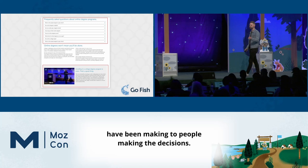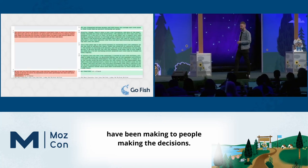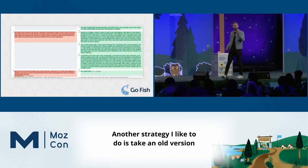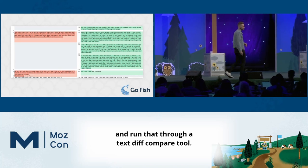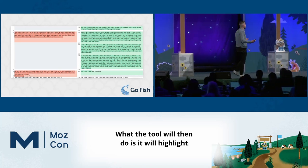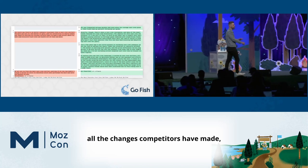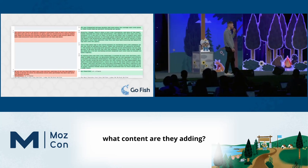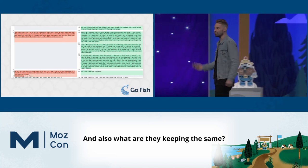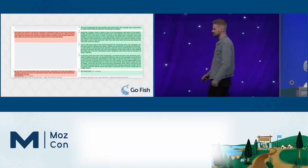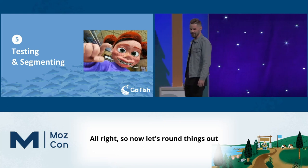Another strategy is to take an old version of text and a current version of text and run them through a text diff/compare tool. The tool will then highlight all the changes competitors have made — what content are they adding, what are they changing, and also what are they keeping the same.